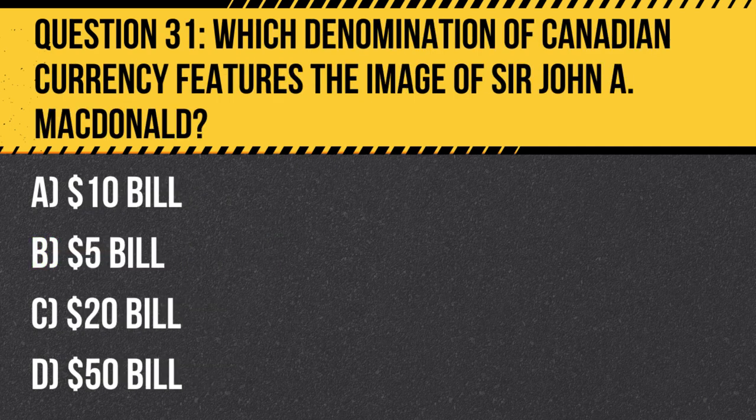Question 31. Which denomination of Canadian currency features the image of Sir John A. Macdonald? A. $10 bill. B. $5 bill. C. $20 bill. D. $50 bill.